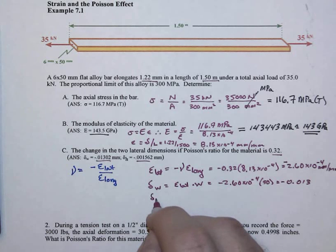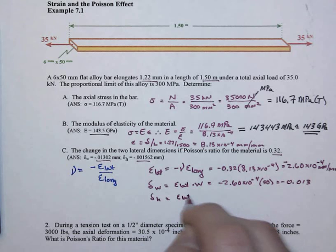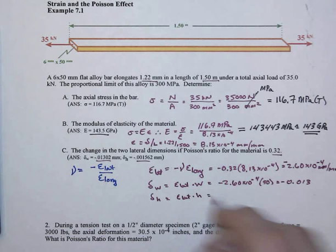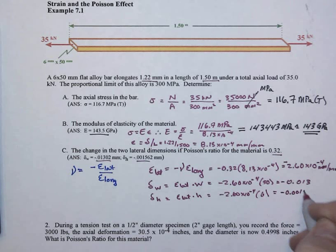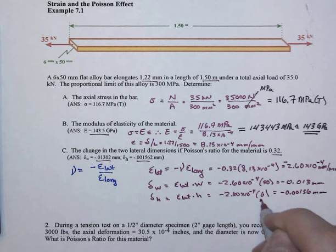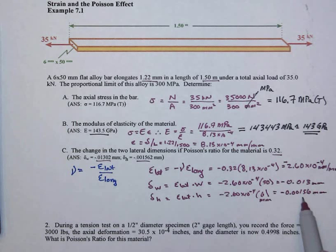And then the deformation in the height is also strain lateral times the original height, minus 2.60 times 10 to the minus 4th times 6. That gives us minus 0.00156. In both cases, that's millimeters because the W and the H were in millimeters. Notice how incredibly tiny those are. That's oftentimes why we sometimes don't even talk about this effect, because our strains are going to be pretty small and the changes in the lateral dimension are small. But they do exist.